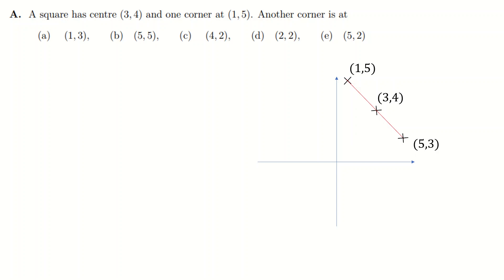What you actually need to do is say: from the corner of the square to the center, you go one down, two across. To get to the next corner, you rotate this movement 90 degrees, so it will be two down, one across. That gets you to the correct point, which is (2, 2). You could also rotate 90 degrees the other way — two up, one across — but that point isn't listed. So the answer is (2, 2).